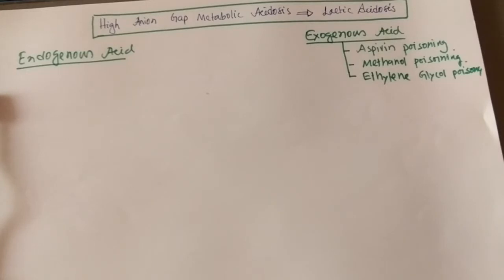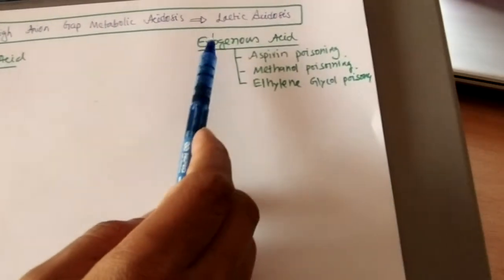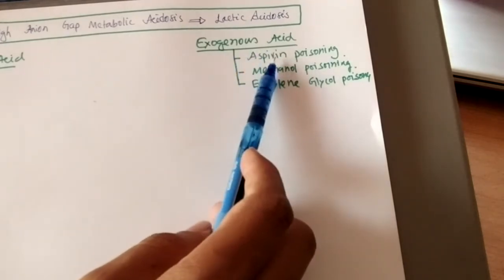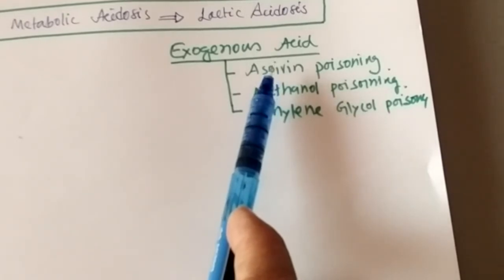What are the causes of high anion gap metabolic acidosis? High anion gap metabolic acidosis may be caused by exogenous acid load or endogenous acid load. Exogenous acid load means acid load entering the body from outside.